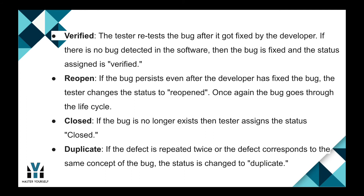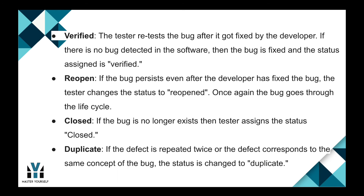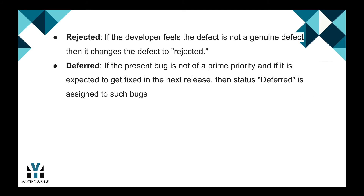Next state is Closed. If the bug no longer exists, then the tester assigns the status Closed. Next state is Duplicate. If the defect is repeated twice or the defect corresponds to the same concept of the bug, the status is changed to Duplicate. Rejected: if the developer feels the defect is not a genuine defect, then it changes the defect to Rejected. Deferred: if the present bug is not of a prime priority and it is expected to get fixed in the next release, then status Deferred is assigned to such bugs.